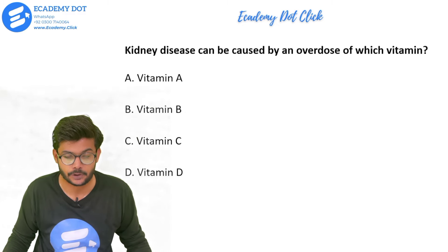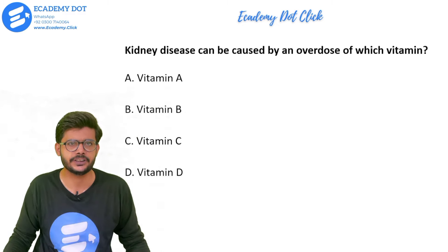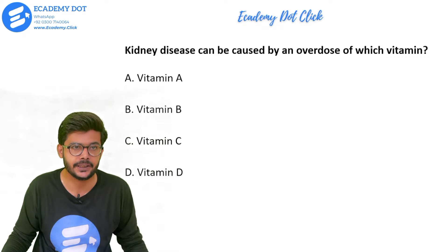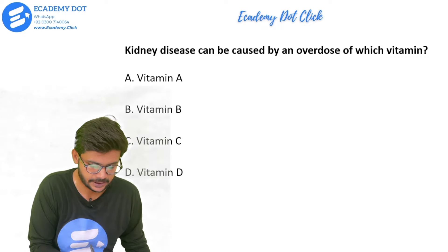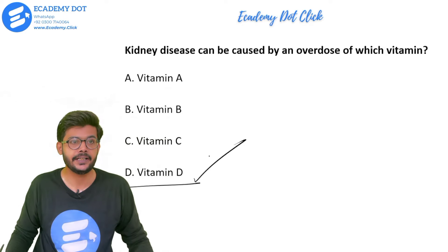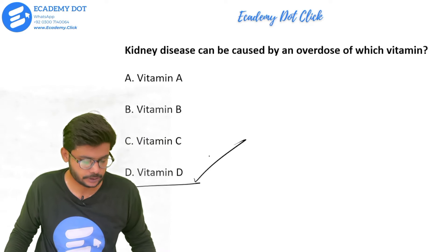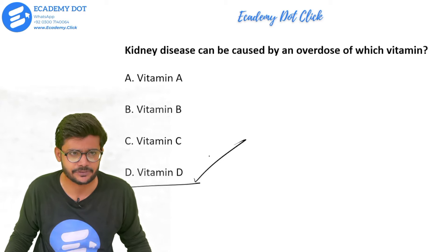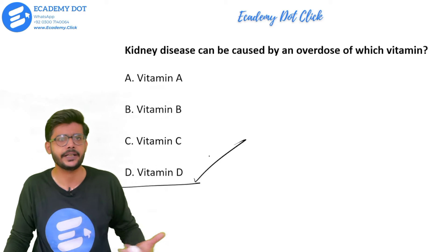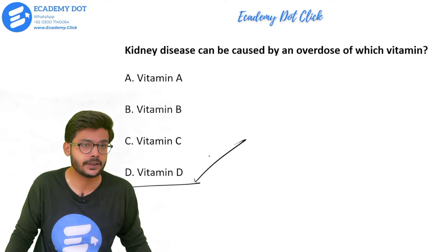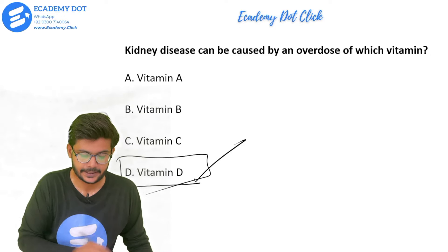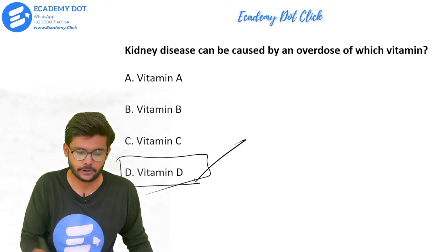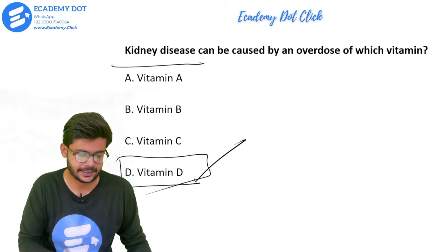Kidney disease can be caused by an overdose of which vitamin? Options are vitamin A, B, C, or D. The right answer is vitamin D. An overdose of vitamin D causes hypercalcemia, and excess calcium travels to the kidney and becomes the cause of kidney stones. Vitamin D overdose causes kidney disease.